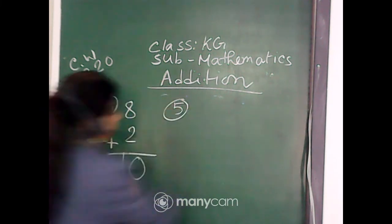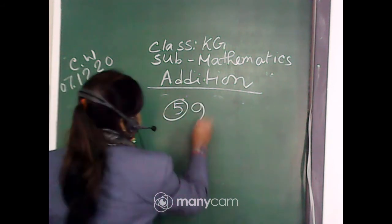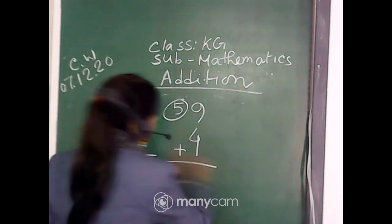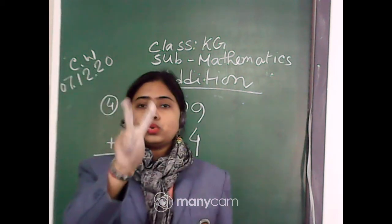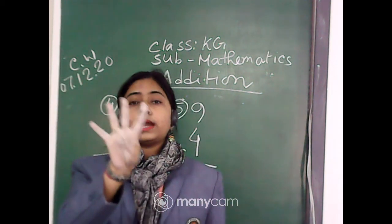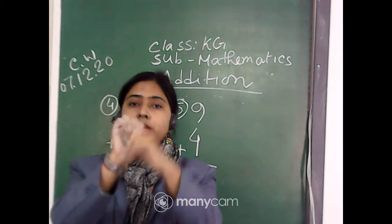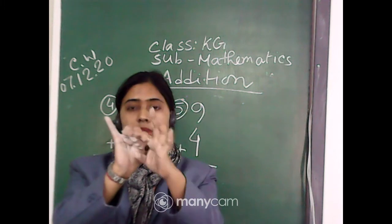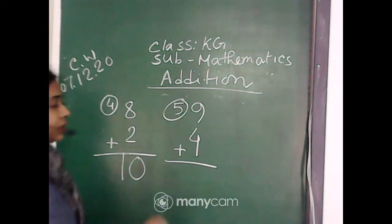Next, number 5: 9 plus 4. Small number is 4. So, 1, 2, 3, 4. And 9 after 4 fingers: 10, 11, 12, 13. Again: 10, 11, 12, 13. So, 9 plus 4 is equal to 13.